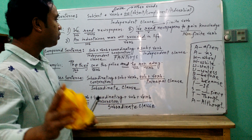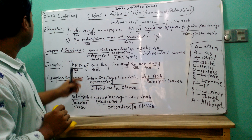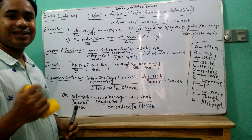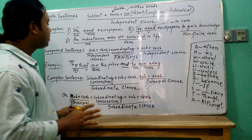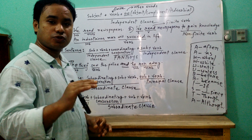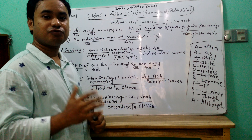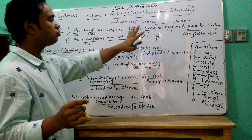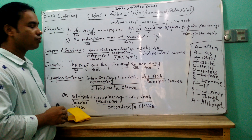Before that, let's explain once again what we need to make each sentence type. To make a simple sentence, we have to use just a subject and a finite verb. Finite verb means tense verb. For example: 'We read newspapers', 'We read newspapers to gain knowledge', 'An industrious man will succeed.'